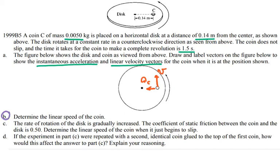In order to determine the linear speed of the coin, I need to know the distance that the coin travels in one revolution. So velocity is going to be equal to the distance over the time.